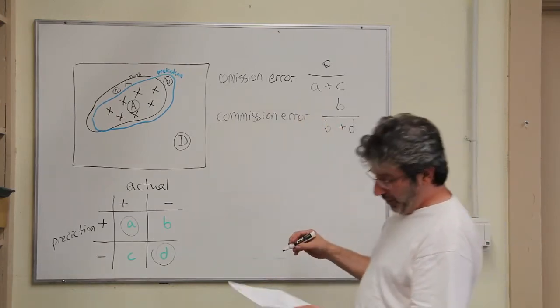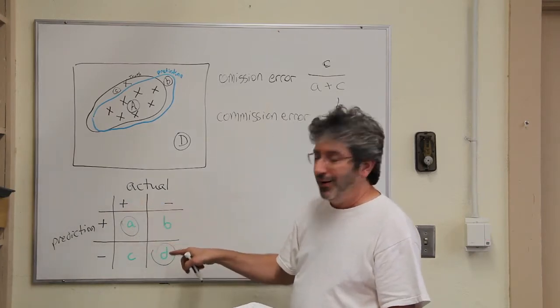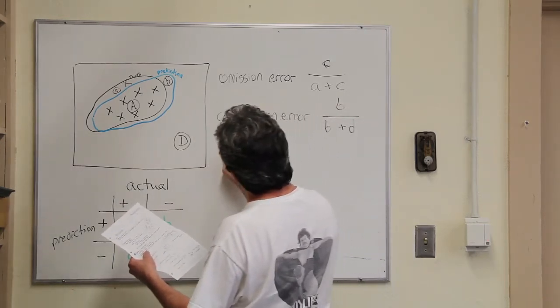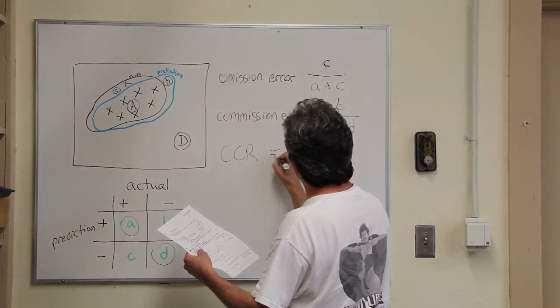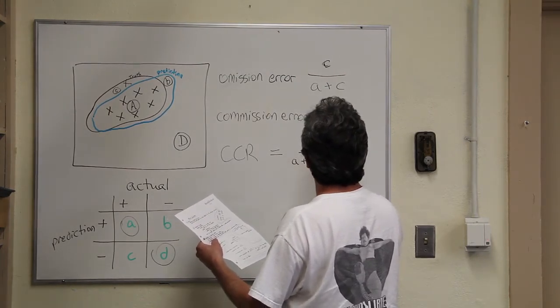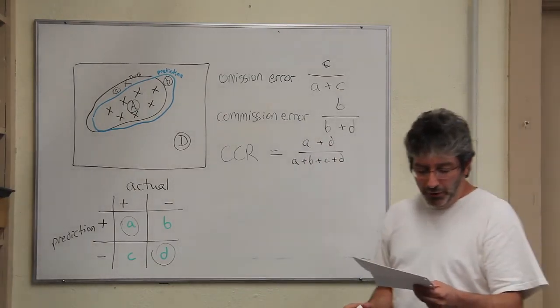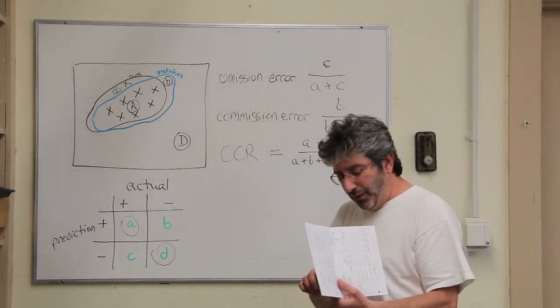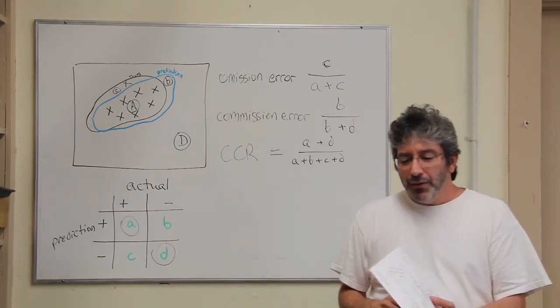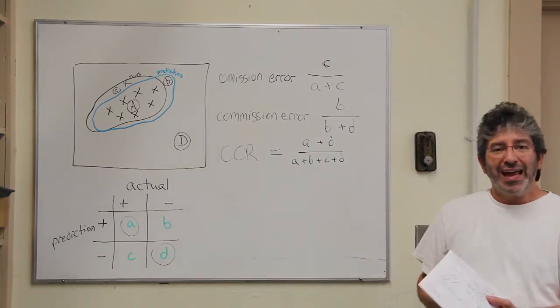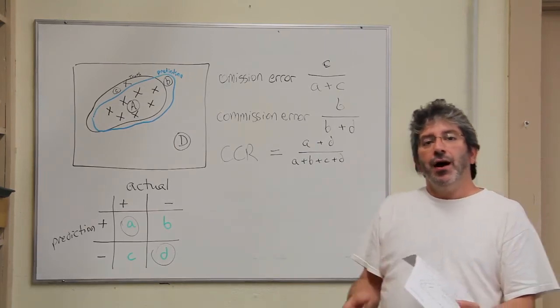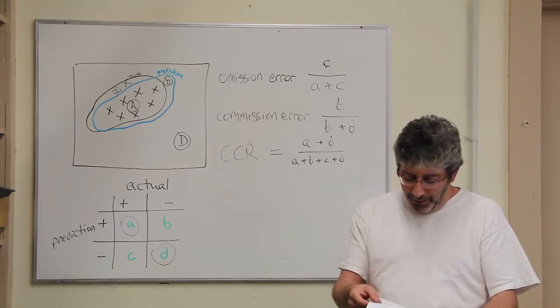Now, we can look at these things together, and we can ask, essentially, how many of our test points are correctly predicted versus not. So, we could have a correct classification rate, CCR, equal to A plus D divided by A plus B plus C plus D. Okay? And that would give us an overall correct classification rate. And you'll see in the literature many other measures that are based on the confusion matrix. And the most common one that you'll see is kappa. And kappa is essentially just a measure of correct classification rate above and beyond random expectations.